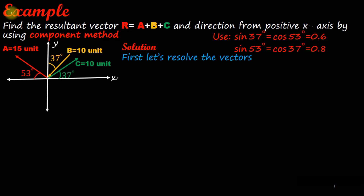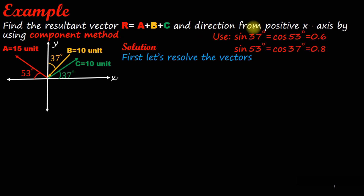The resultant vector R is equal to vector A plus vector B plus vector C. We need to find the direction from the positive x-axis by using the component method. The resultant vector A plus B plus C, and its direction from the positive x-axis, can also be expressed in polar form.